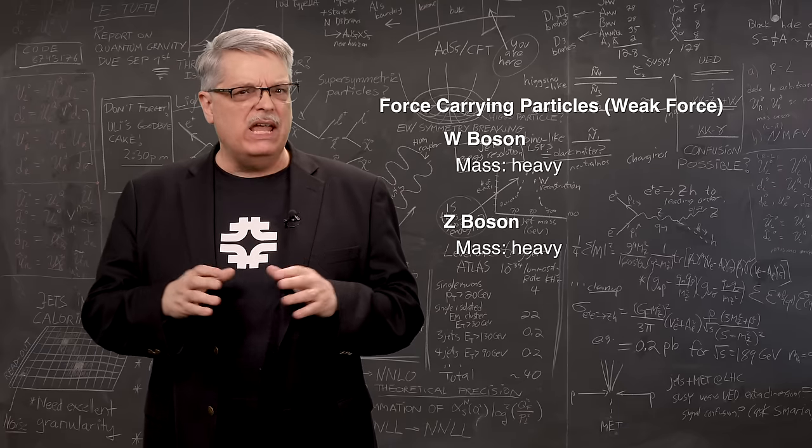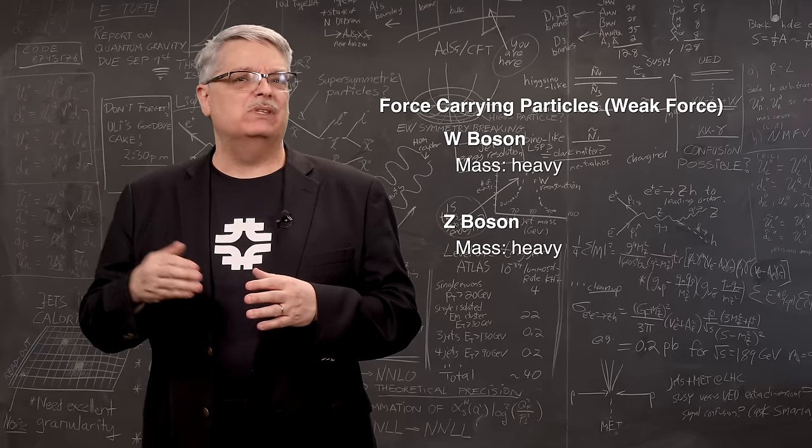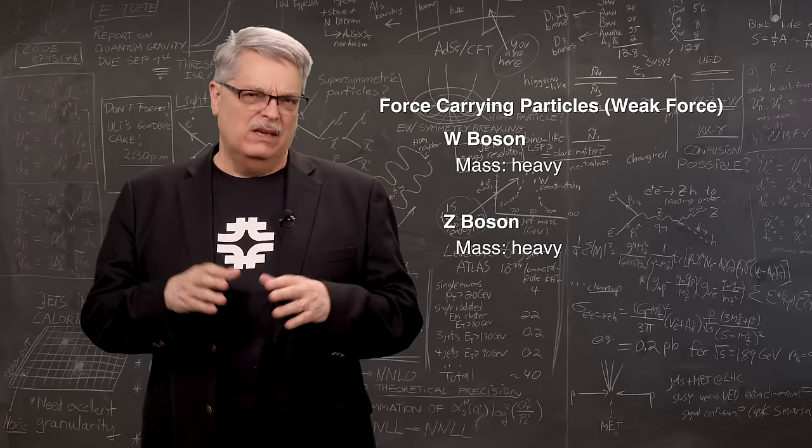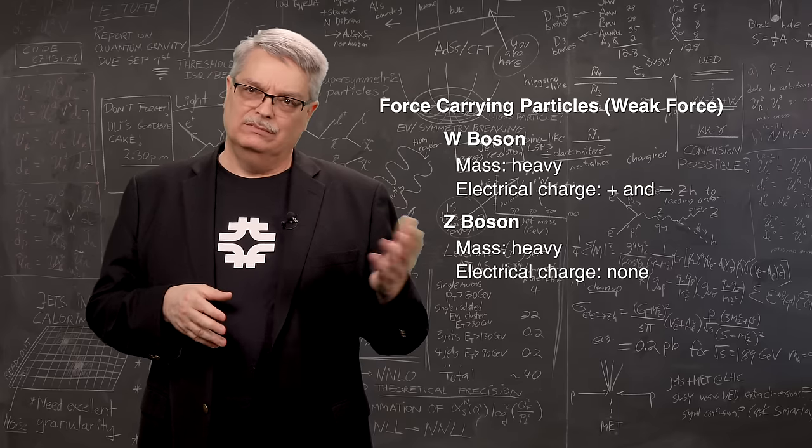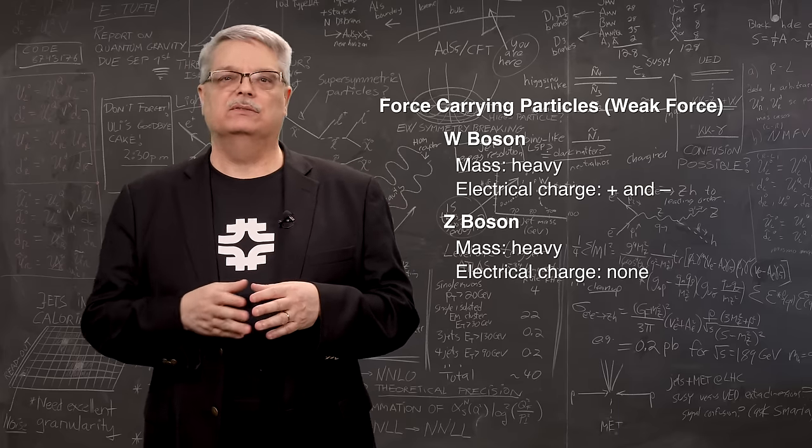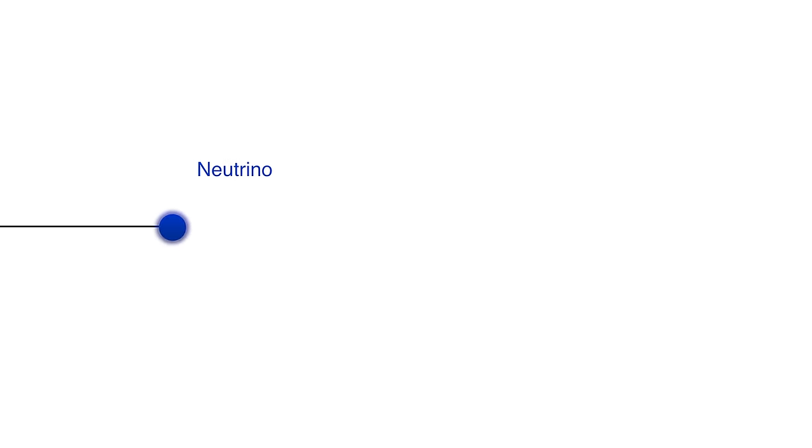Both particles are very heavy, just shy of 100 times heavier than a proton. The Z boson is electrically neutral, while the W boson comes in two varieties—one negative and one positive. The way a neutrino interacts is that it is just traveling along and, when it gets near the nucleus of an atom, wham—the neutrino emits either a W or a Z boson.